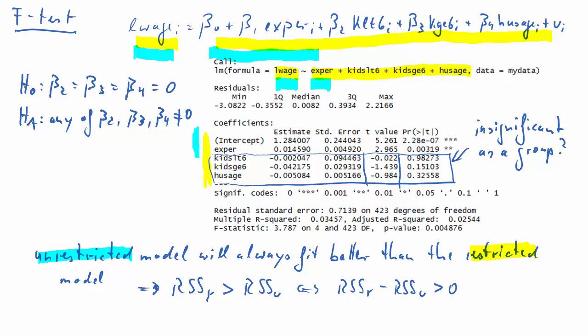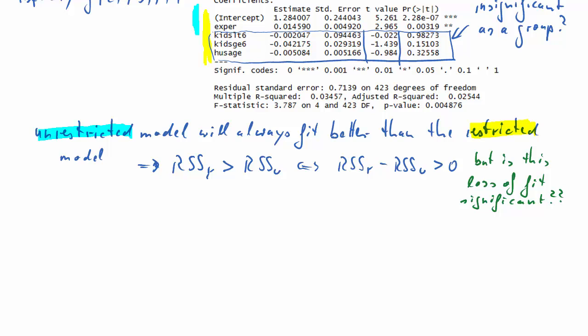In terms of statistical notation, we would say that the residual sum of squares for the restricted model is larger than the residual sum of squares of the unrestricted, or that the difference between them is positive. And this quantity, RSSR minus RSSU, is at the core of our interest. It's the loss of fit we suffer from imposing the restrictions.